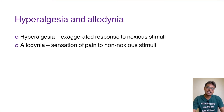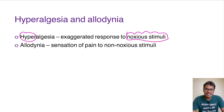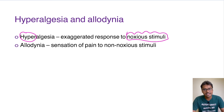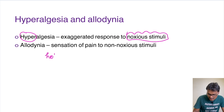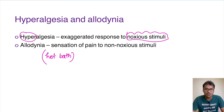Coming to the two terms — hyperalgesia and allodynia. The term 'hyper' means exaggerated response, so if somebody has an exaggerated response to a painful stimuli, that is called hyperalgesia. Allodynia means the sensation of pain in response to a non-noxious stimulus. For example, taking a hard water bath can induce pain in a patient with sunburn — a classical example many of us have experienced. The original stimulus is a hard water bath, which is not noxious, but it creates a painful sensation because of the underlying condition. That is why this is referred to as allodynia.